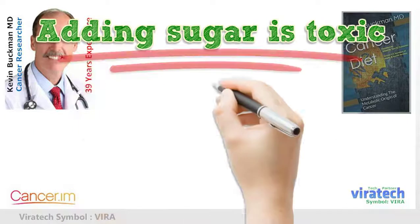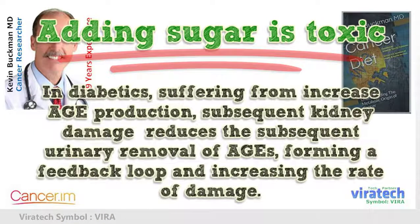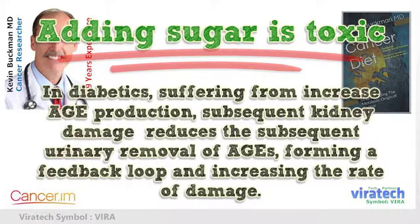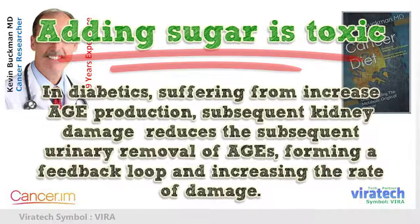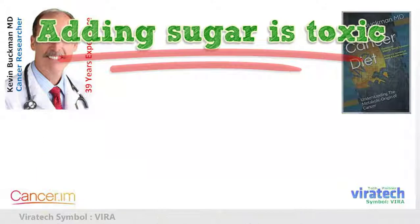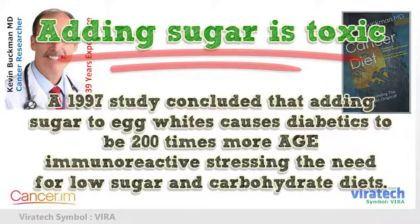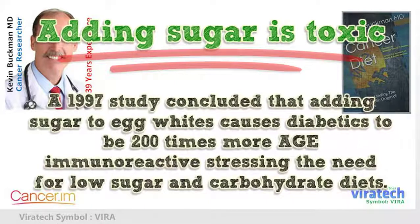In diabetics suffering from increased AGE production, subsequent kidney damage reduces urinary removal of AGEs, forming a feedback loop and increasing the rate of damage. A 1997 study concluded that adding sugar to egg whites causes diabetics to be 200 times more AGE-immunoreactive, stressing the need for low-sugar and low-carbohydrate diets.